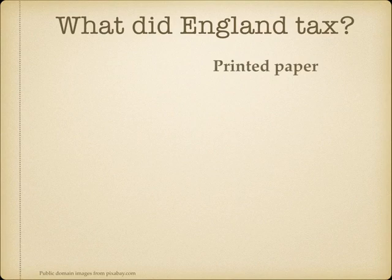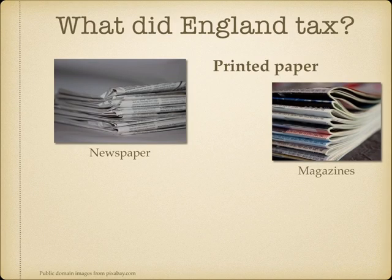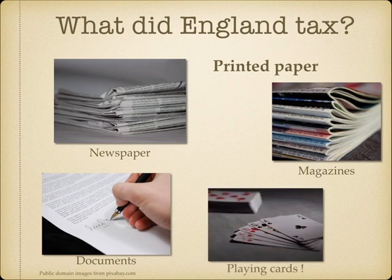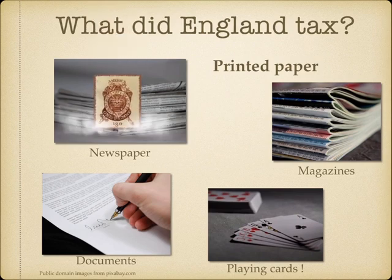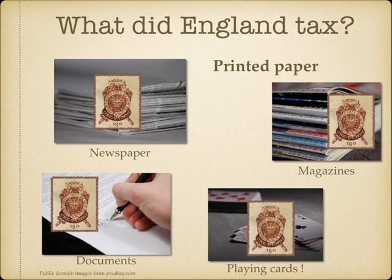Things that were made out of paper with printing on them — like newspapers, magazines, official documents like papers that are used by the government, and playing cards, because they are printed on paper. It's called the Stamp Act, because the people who printed this paper had to put a stamp on each paper. And they had to pay the British government to get these stamps.